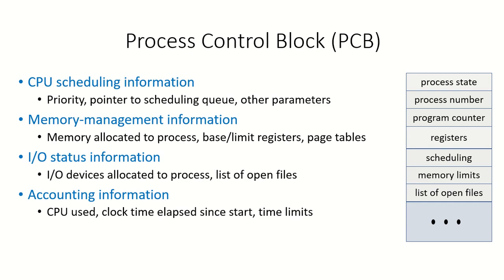The scheduling information of the process is also available. Scheduling means the way in which the process will be assigned the CPU. Each system follows an algorithm to assign the processor to a particular process. So what is the priority of the current process? Which scheduling queue does that process go to? The pointer to the scheduling queue and other parameters are also available in the PCB.